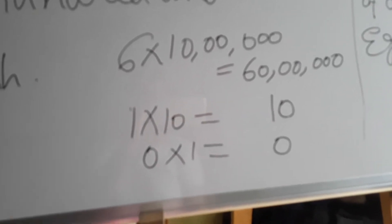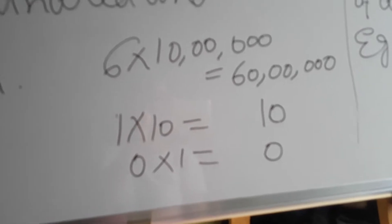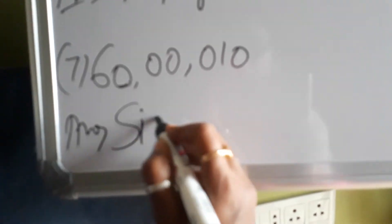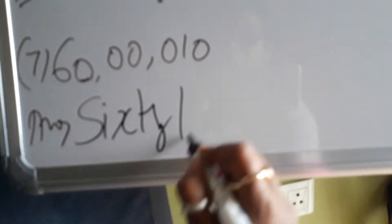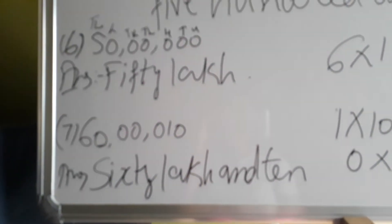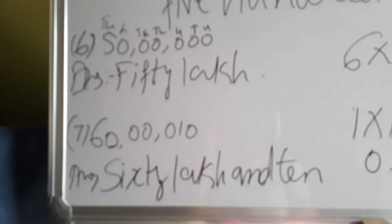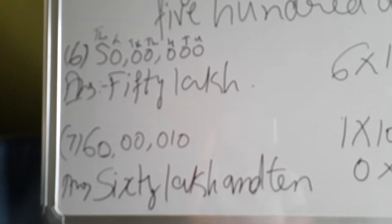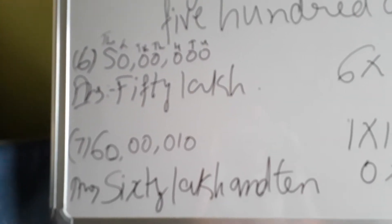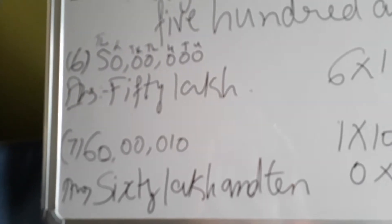And zero into one place again it is zero. So that means it's only 60 lakh and ten. So how do we write that? Simple: 60 lakh and ten. Done. I hope it's understood. Now another short so that you know our video is concise and it doesn't take time to upload.